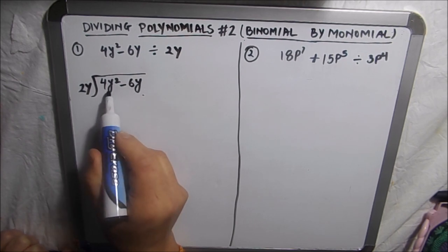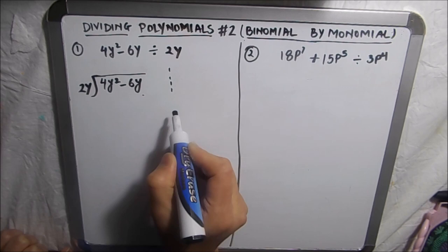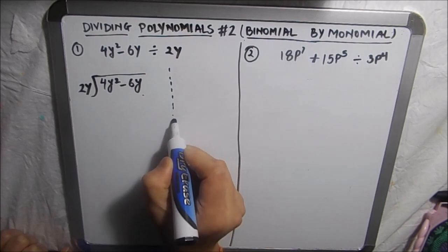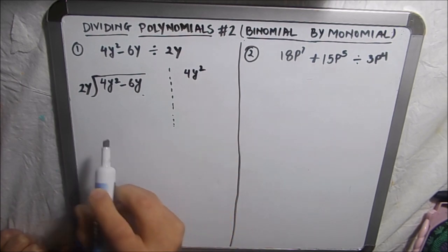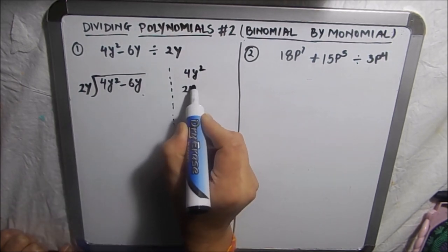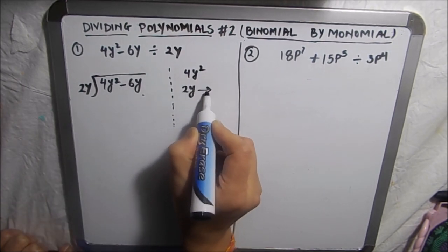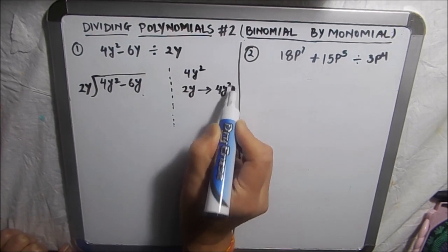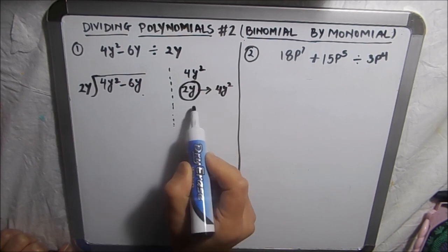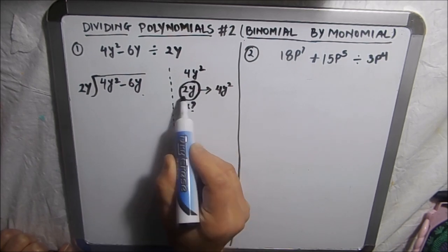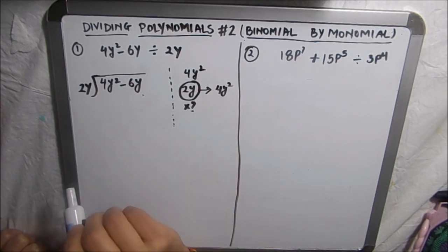So we have to get, this is our rough work here to check. Our first term is 4y². So we want 2y to become 4y². What number should we multiply to 2y so that we get 4y²?